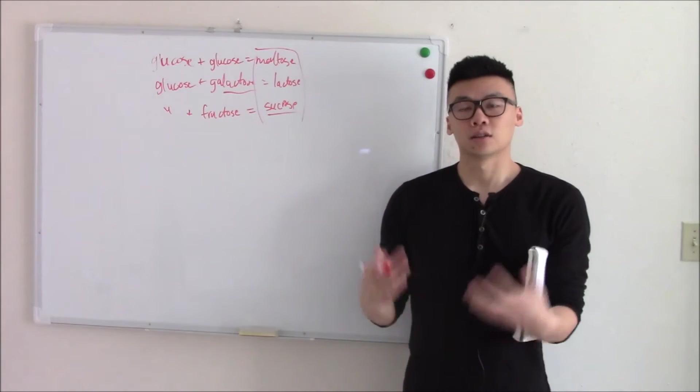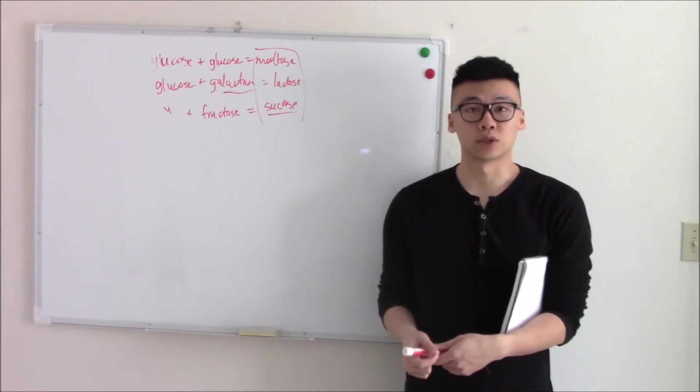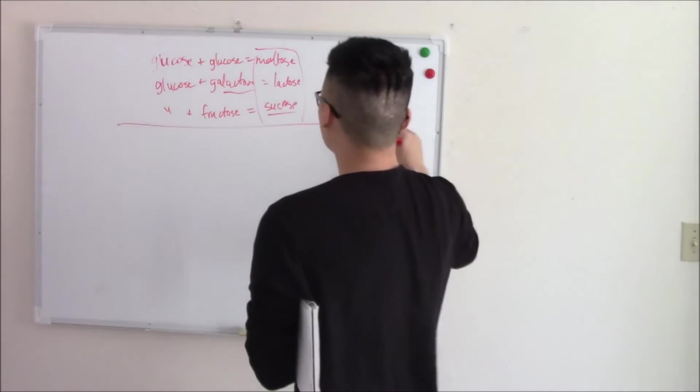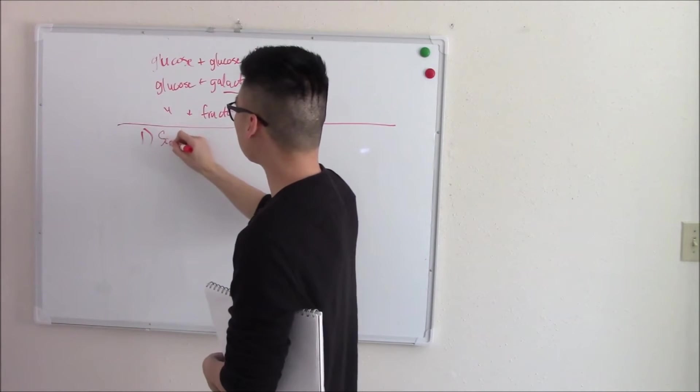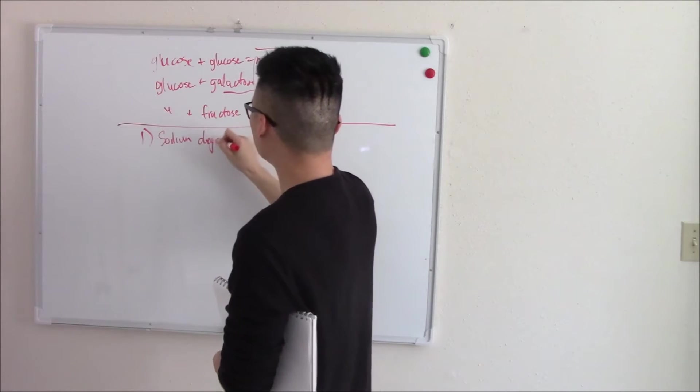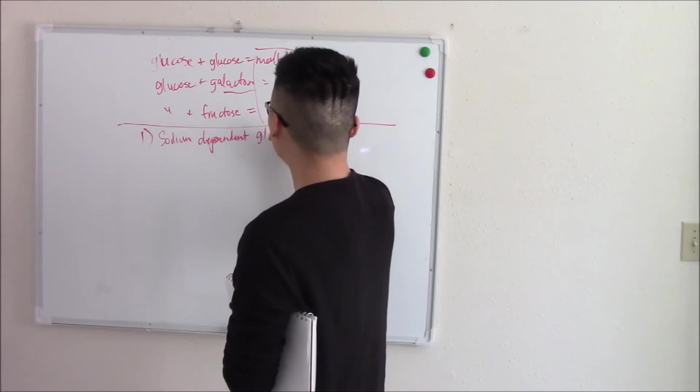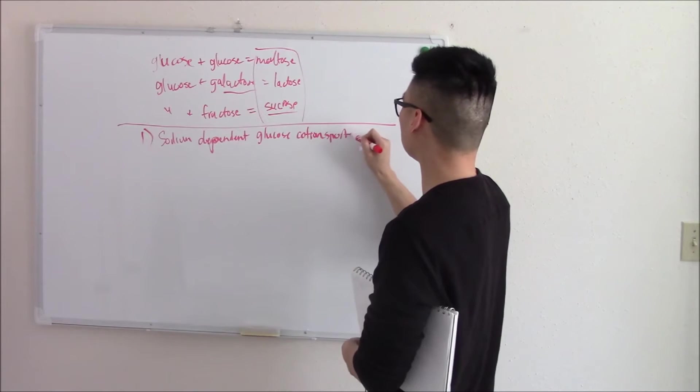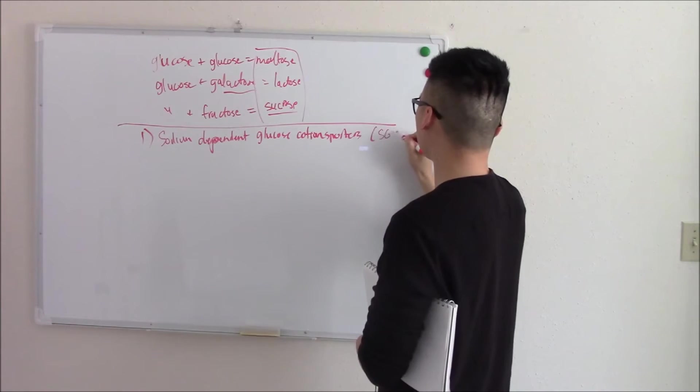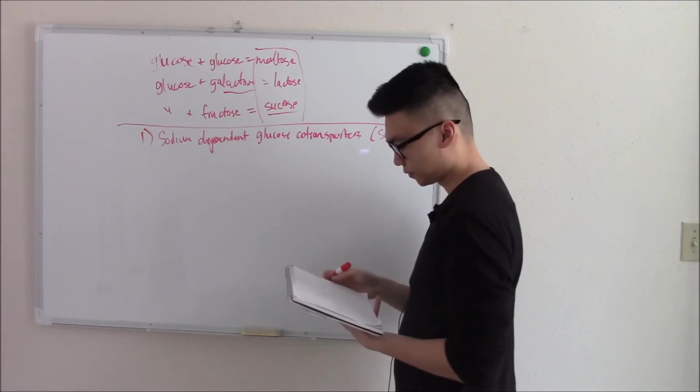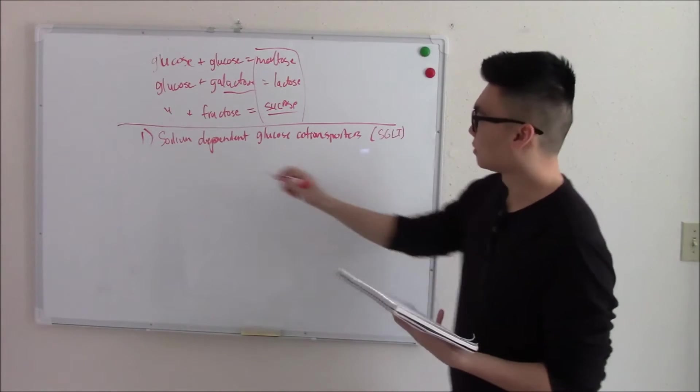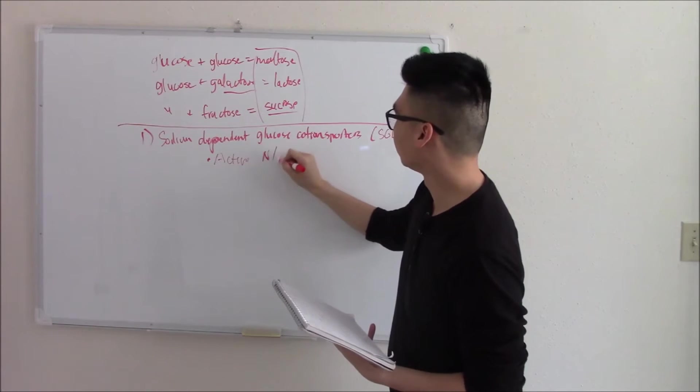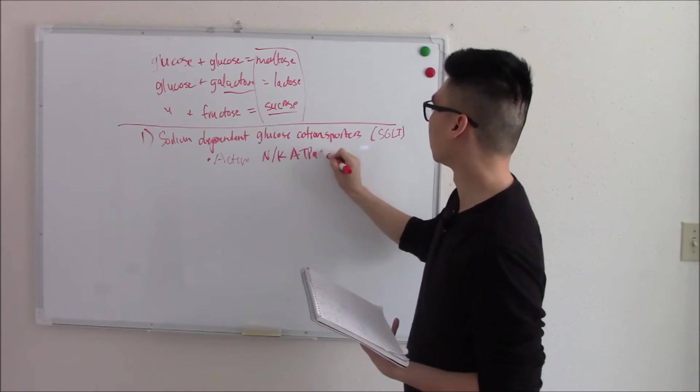Now when you ingest carbohydrates, your body will break it down and then transport it where it needs to be transported. There's two main transporters for sugars. Your first main group of transporters are going to be your sodium-dependent glucose co-transporters, better known as SGLT. So your SGLTs, these are active, which means they need sodium, potassium, ATPase pumps to power them.